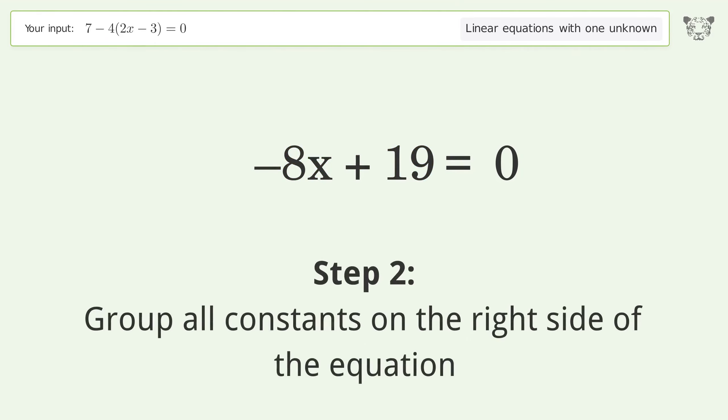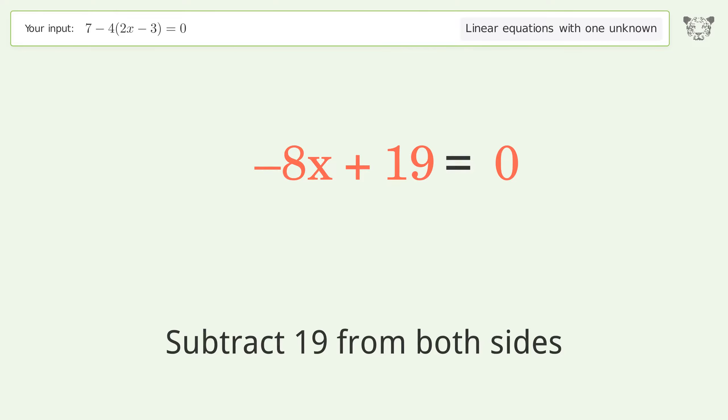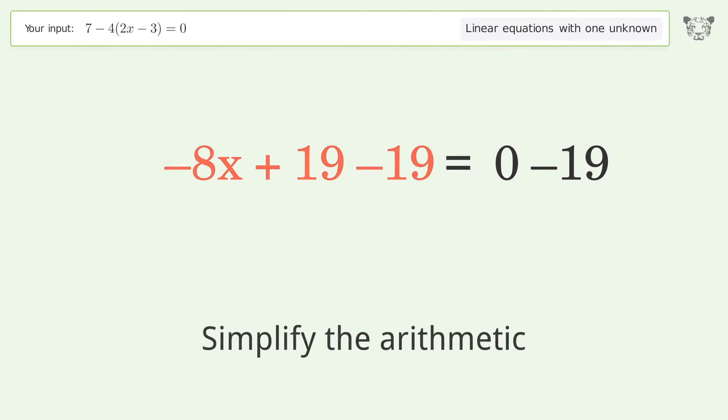Group all constants on the right side of the equation. Subtract 19 from both sides. Simplify the arithmetic.